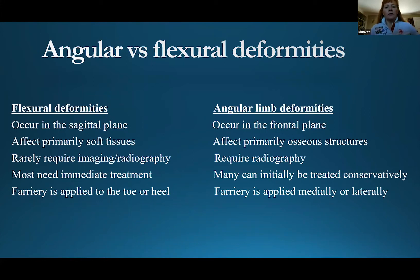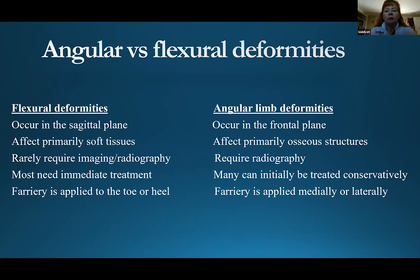In terms of angular limb deformities versus flexural deformities, these are just a couple of points to help keep straight in our mind what we're dealing with. Flexural deformities occur in the sagittal plane, so when you're examining a foal with flexural deformities you're going to look at them from the side. That contrasts with angular limb deformities which occur in the frontal plane, which means when examining these foals you're going to be standing in front of the foal looking towards the back end.